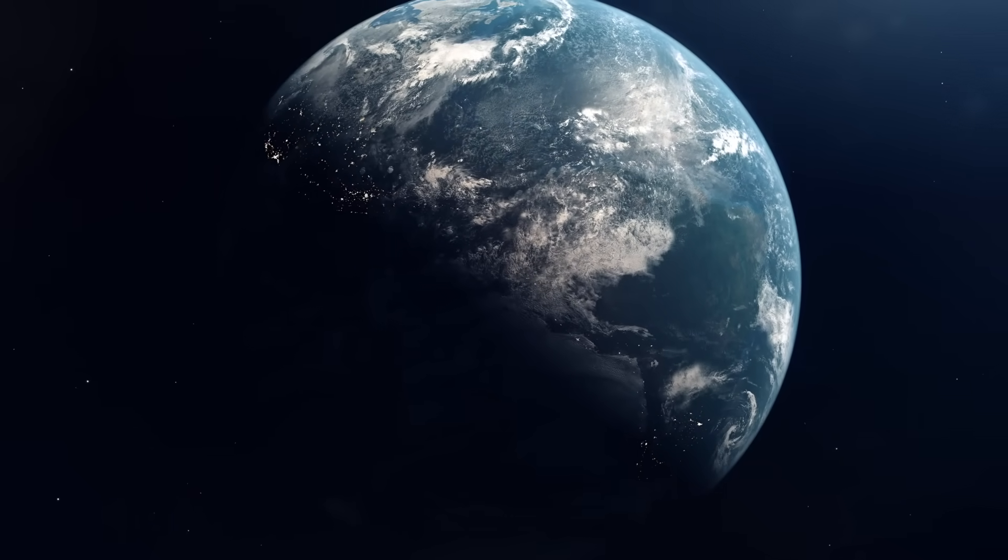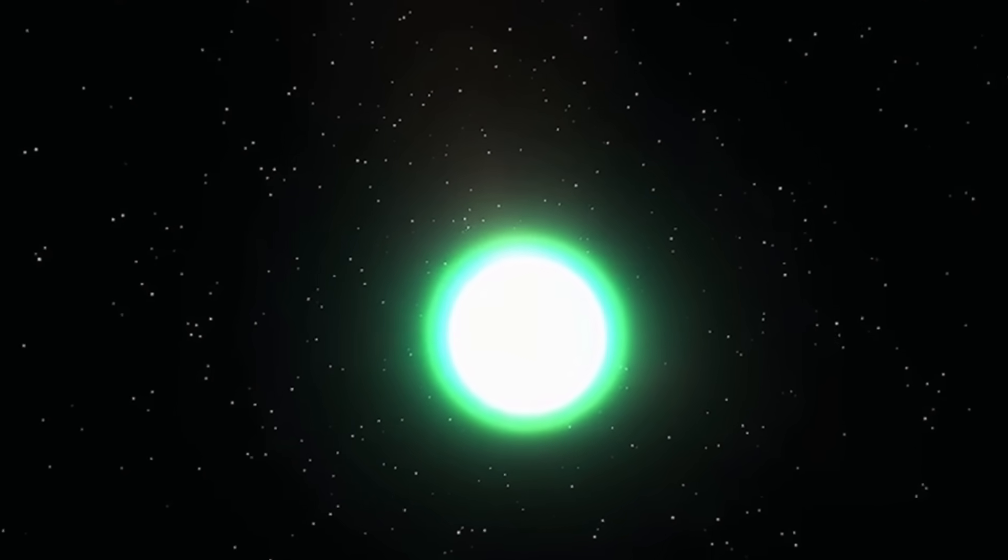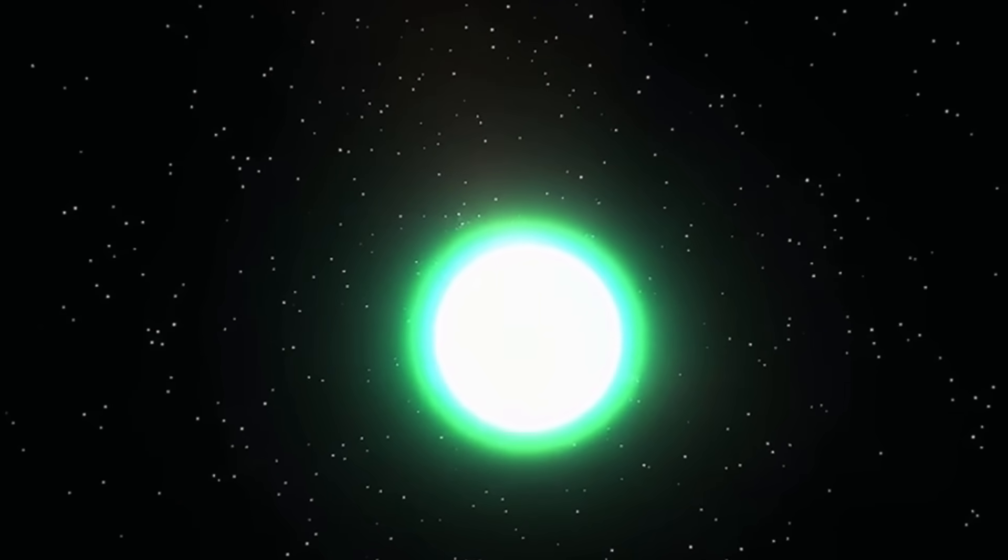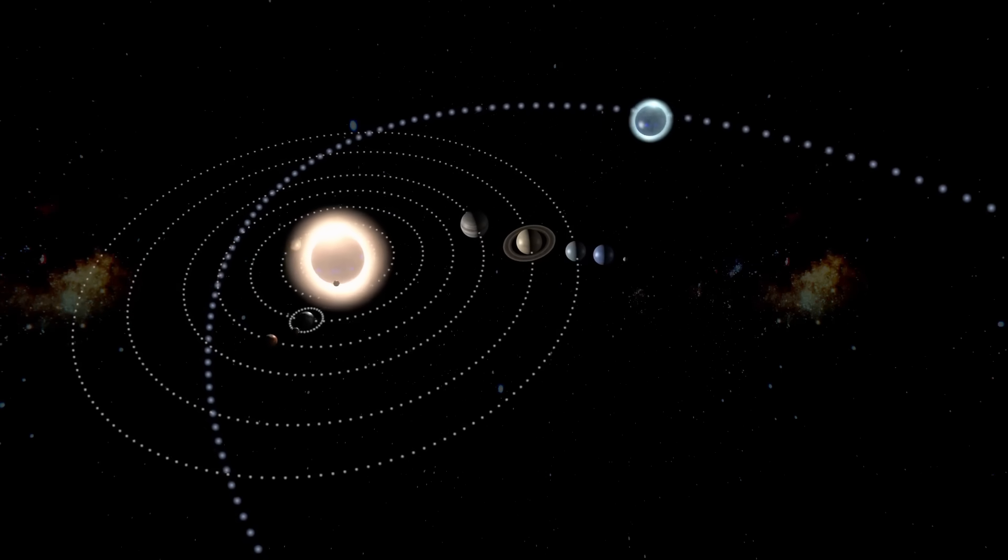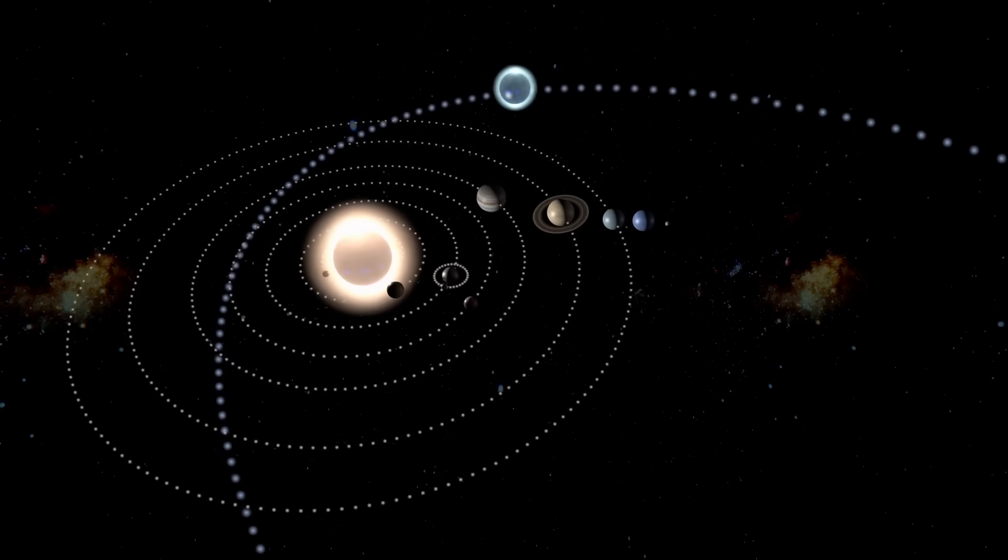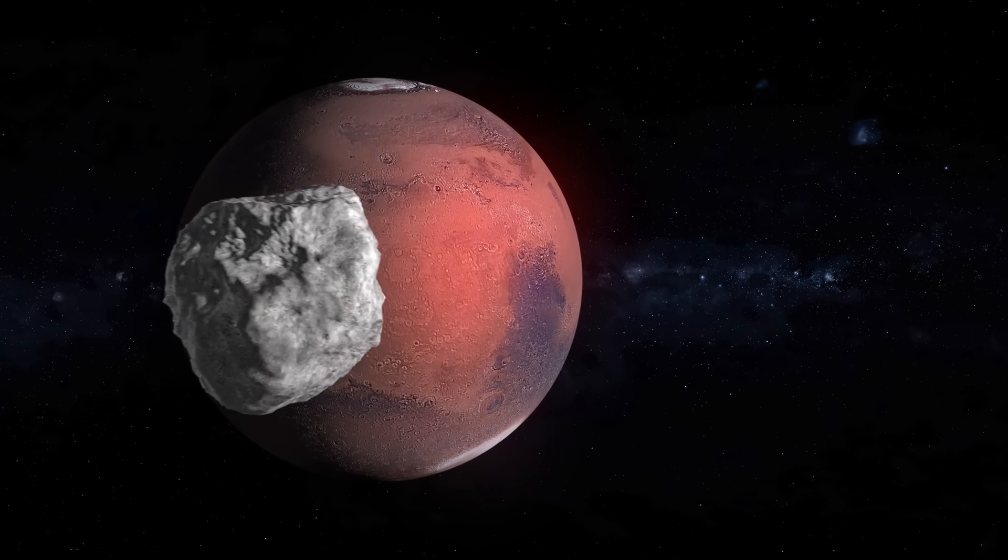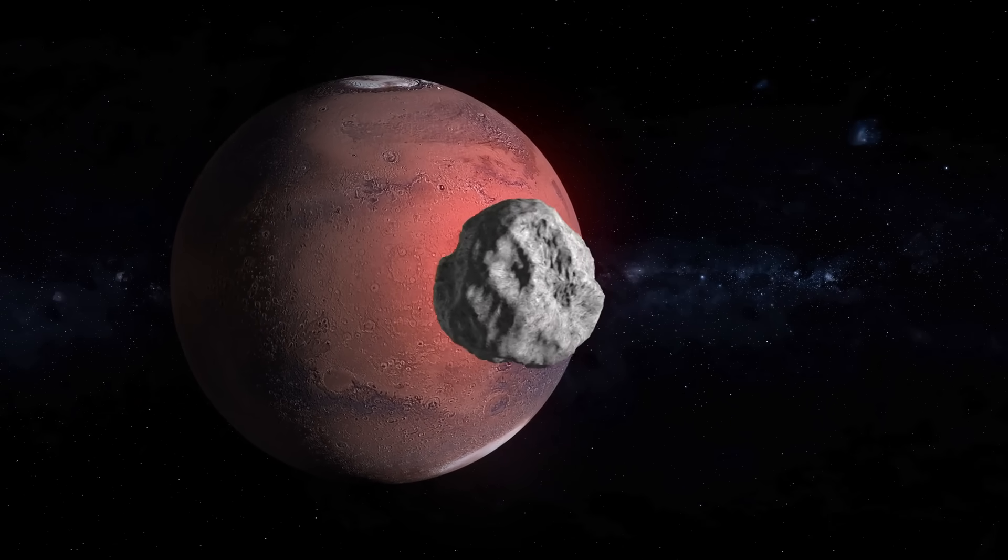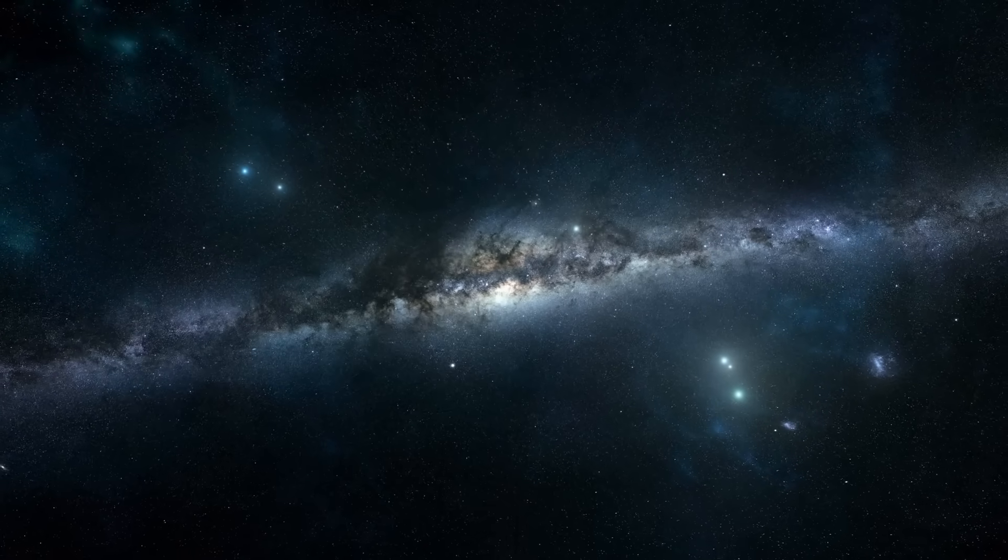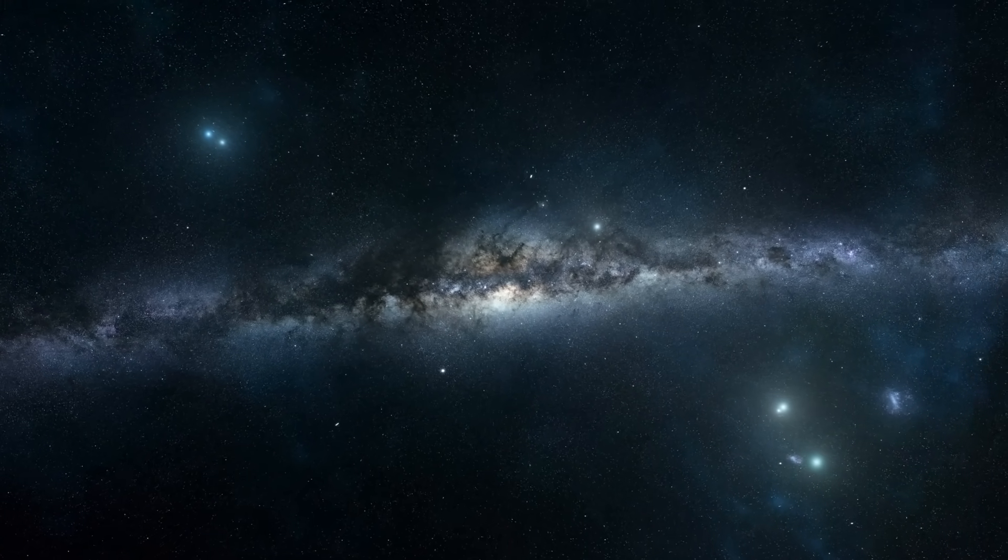Comet 3i Atlas is unlike the countless icy wanderers that orbit the sun. This is no ordinary comet. It is interstellar, originating from beyond our solar system, crossing the unimaginable gulf between stars. Such objects are exceptionally rare and valuable to science because they carry the raw chemical ingredients of other systems, ancient matter forged around distant suns, frozen fragments from alien star nurseries.